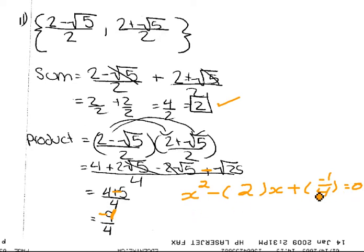And now we multiply everything by 4 to get rid of the fractions, or in this case fraction. And this would be minus 8x and minus 1 equals 0. So that's it. You just have to finish that question off.